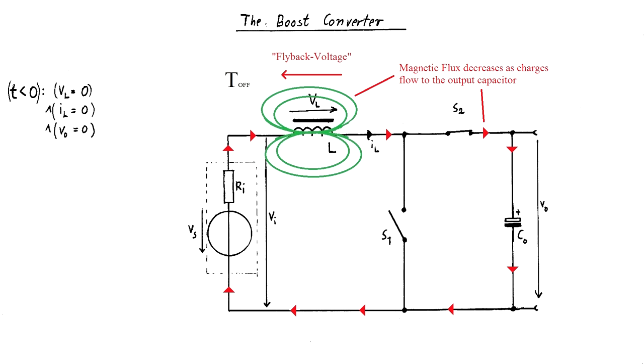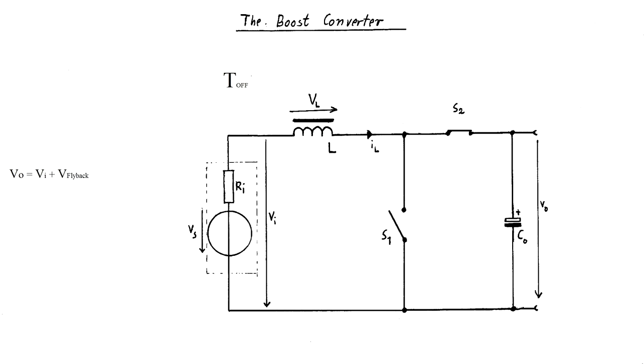At the end of that discharging process, the output voltage is the sum of the input voltage plus the flyback voltage that was induced across the coil during the off period. When a load is now attached to the output capacitor, this process has to be repeated in rapid succession.